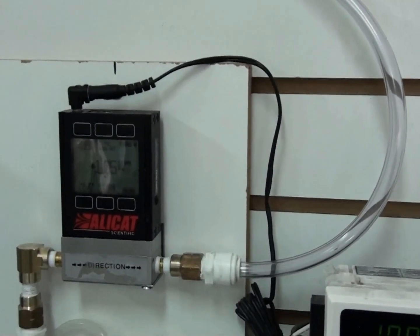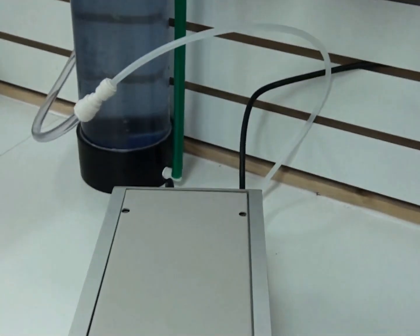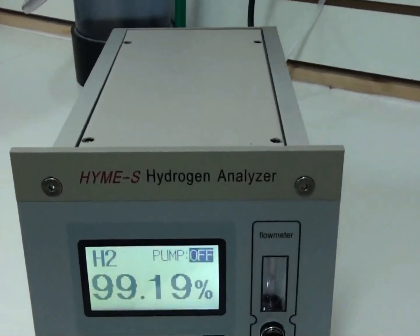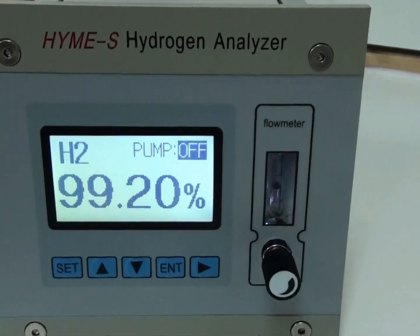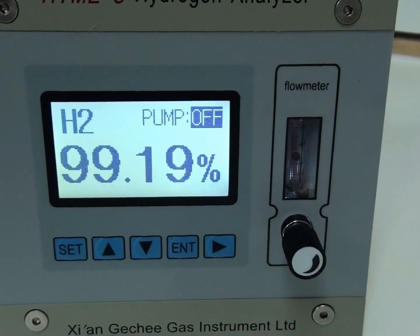From that it exits the meter down into the hydrogen analyzer and you can see there that the purity of hydrogen is over 99%.